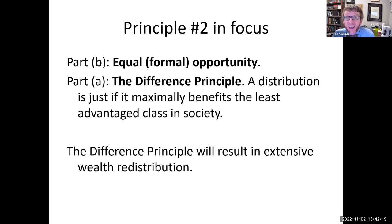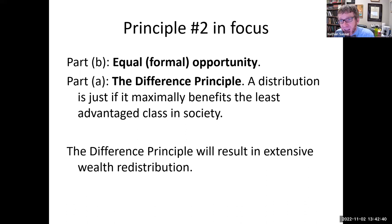If the inequalities are arranged so that they are to everyone's advantage, that means that they must be to the advantage of those who are least well off. In other words, the difference principle entails that a distribution is just if it maximally benefits the least advantaged class in society, because they're part of everyone. And that, it seems, will require an extensive redistribution of wealth from the most wealthy to those less well off.